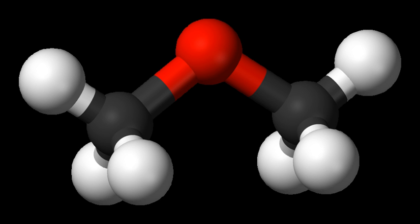Dimethyl ether, also known as methoxymethane, is the organic compound with the formula CH3OCH3, simplified to C2H6O. The simplest ether, it is a colorless gas that is a useful precursor to other organic compounds and an aerosol propellant currently being demonstrated for use in a variety of fuel applications. It is an isomer of ethanol.